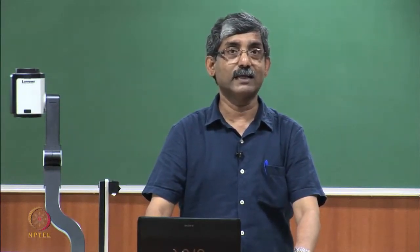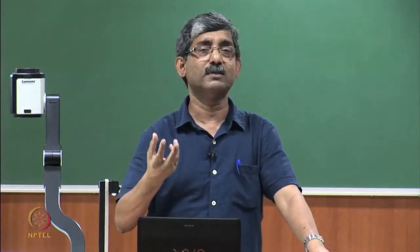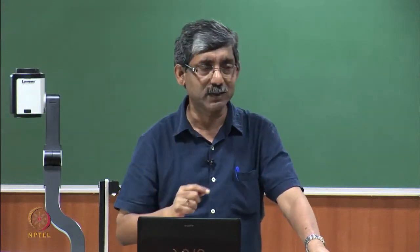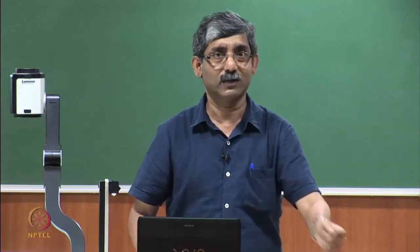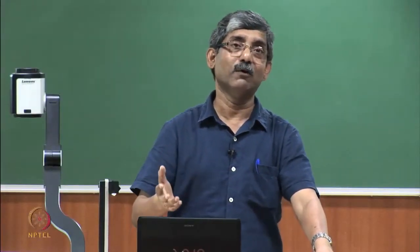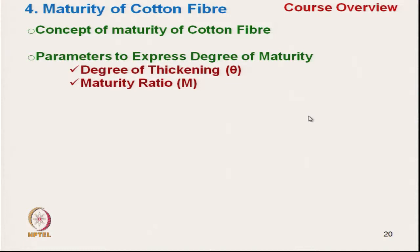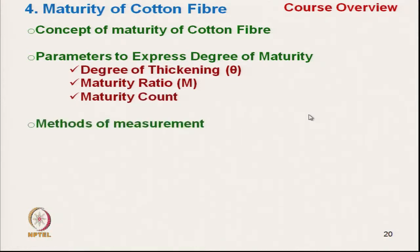After fibre fineness, we will discuss maturity. Maturity is relevant only for cotton — we do not measure maturity for other fibres. Immature fibres adversely affect the quality of material. The concept of maturity of cotton fibre will be covered, along with various parameters to express the degree of maturity, which include degree of thickening, maturity ratio, and maturity count.